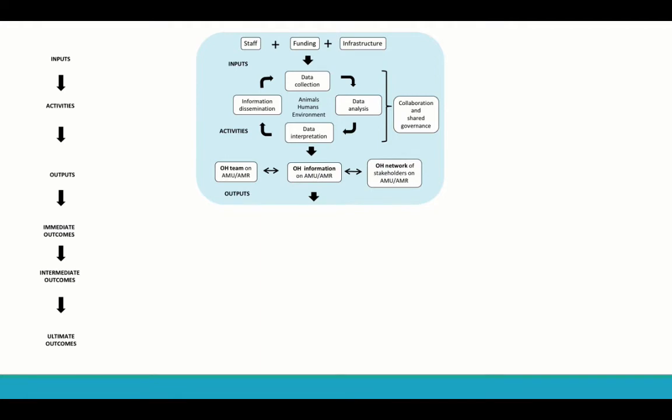Now what would be the outputs? So of course one major output is the information that can come from the integration of data. But also a multidisciplinary or One Health team of analysts and a One Health network of stakeholders, composed of people that contribute to the production of information and who use the information produced by surveillance, can also be considered as outputs of the system.